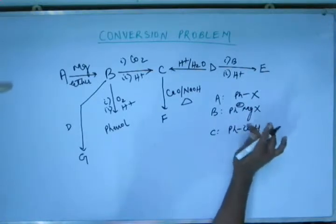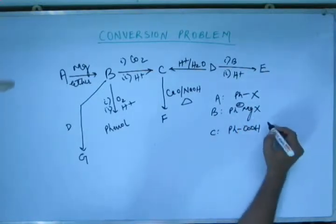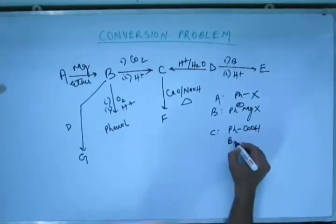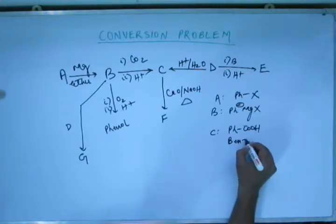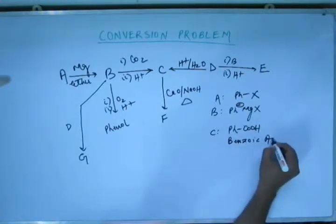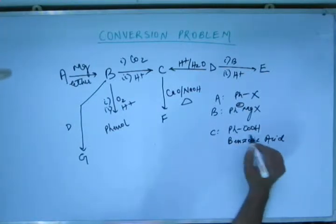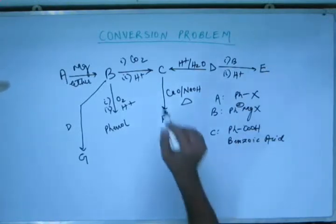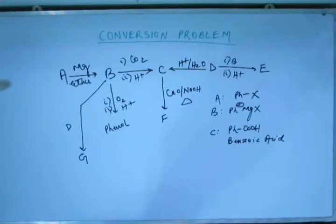Now this acid is a very common and important acid. In case you are not aware of the name of this acid then I will recommend you to remember the name of this acid here itself. This is benzoic acid. Commit this thing to your memory. This pH-COOH is benzoic acid. Now this C is benzoic acid. We have got C.